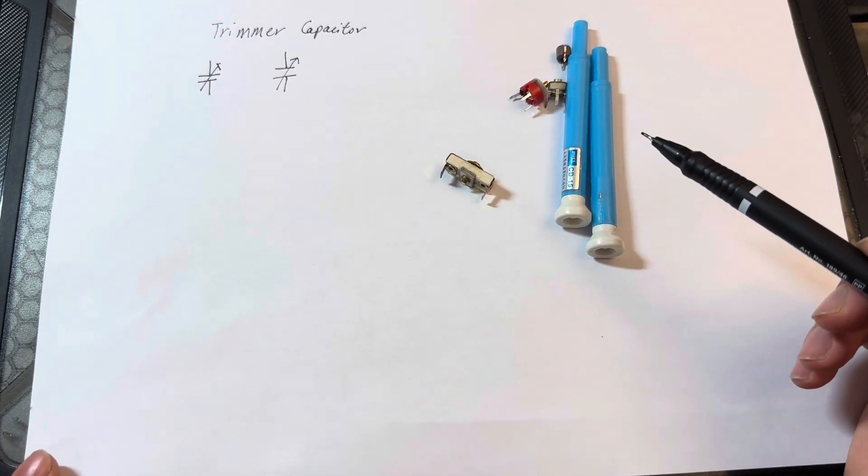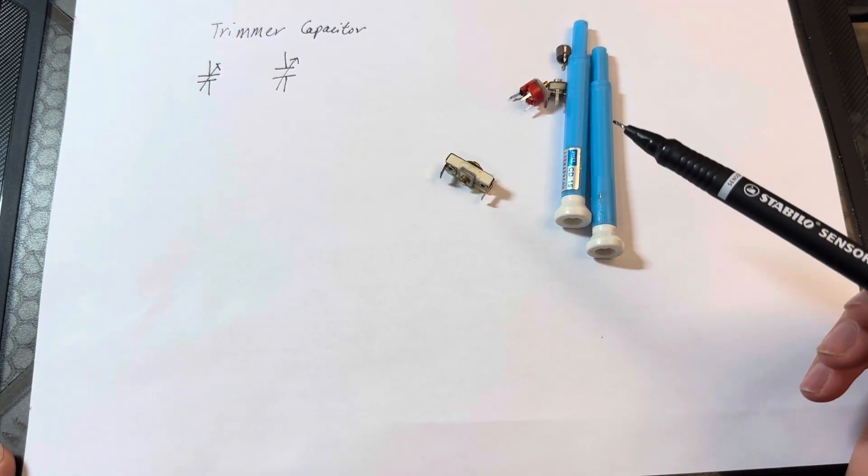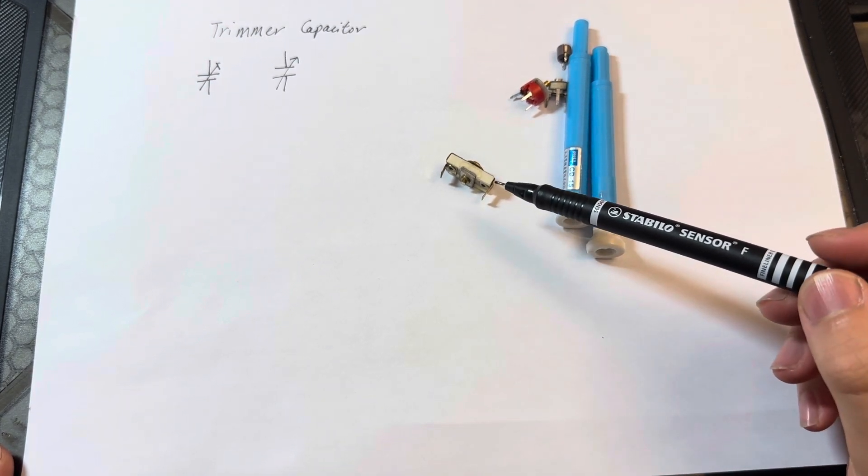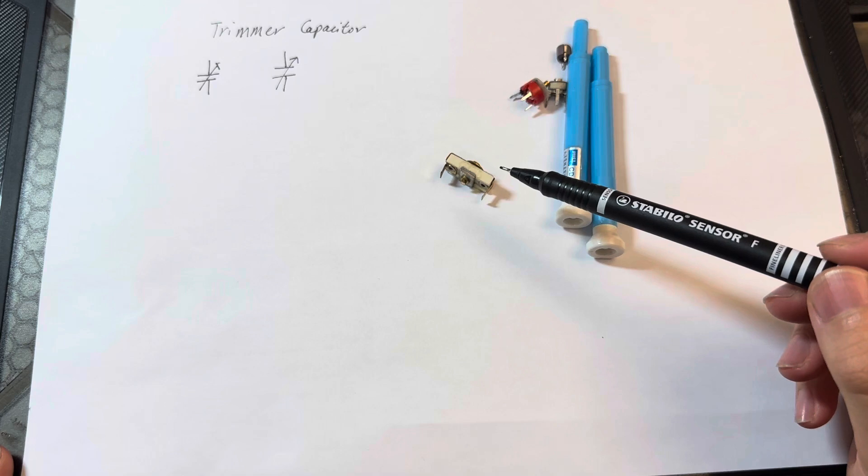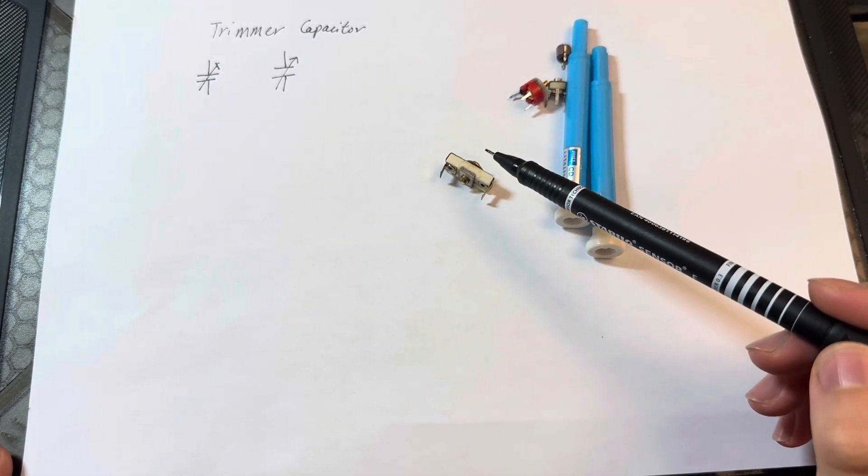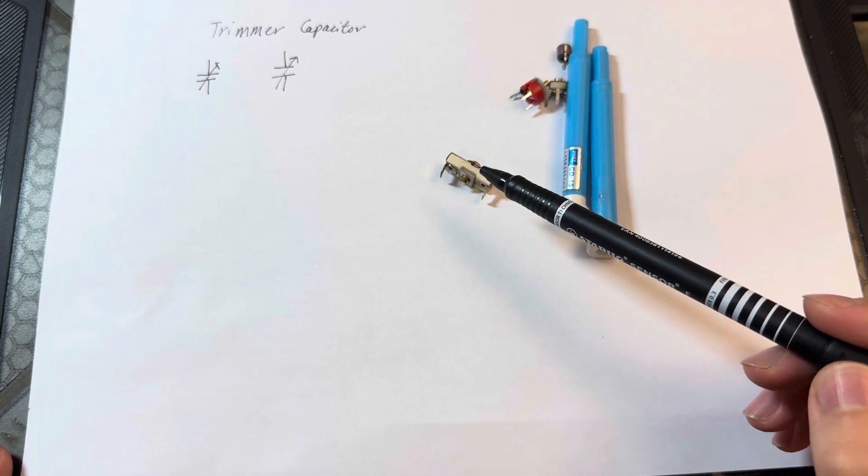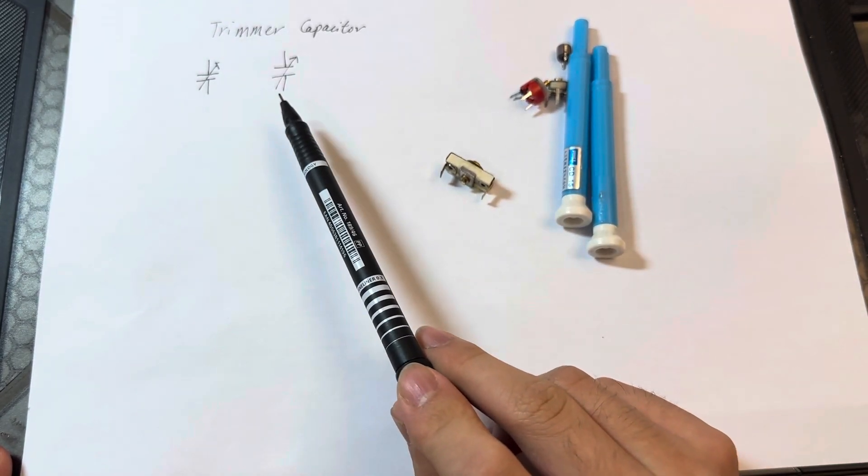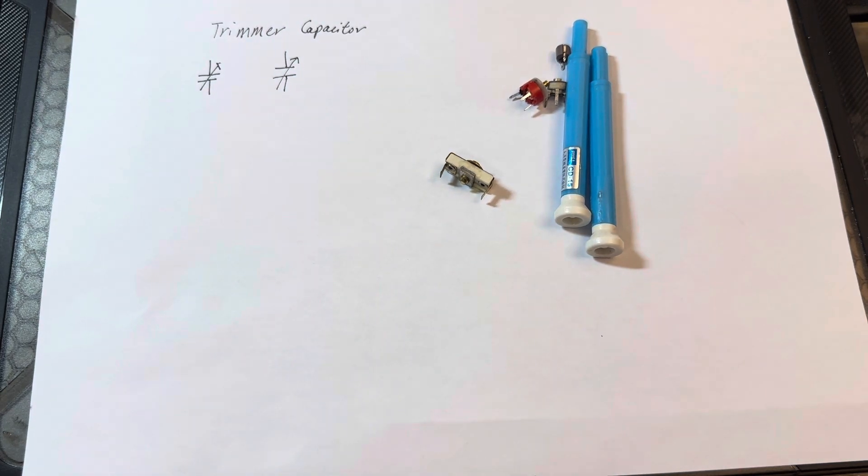Hello, welcome back to another new video. In today's series we'll be talking about trimmer capacitors. Trimmer capacitors are slightly different than normal variable capacitors. With a trimmer capacitor, you set it with a tool and then leave it there, whereas for variable capacitors you change it as often as you like depending on which application you use it for.